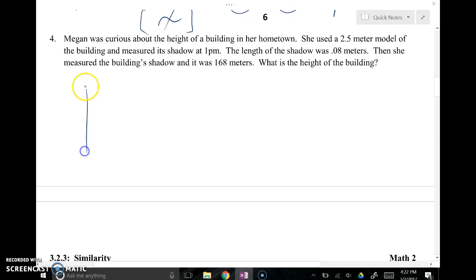Okay, so if we do a model of this, if that would be our real building, we don't know how tall it is, but its shadow on the ground was 168 meters. And then I've got her model, which is this small one, and then its shadow, which was 0.08 meters. So what's matching up, this model was 2.5 meters tall. X is going to go with the 2.5, and 168 is going to go with 0.08. So that's what my proportion is. That's what I'm going to solve. That's what I'm going to cross multiply to get what X is.